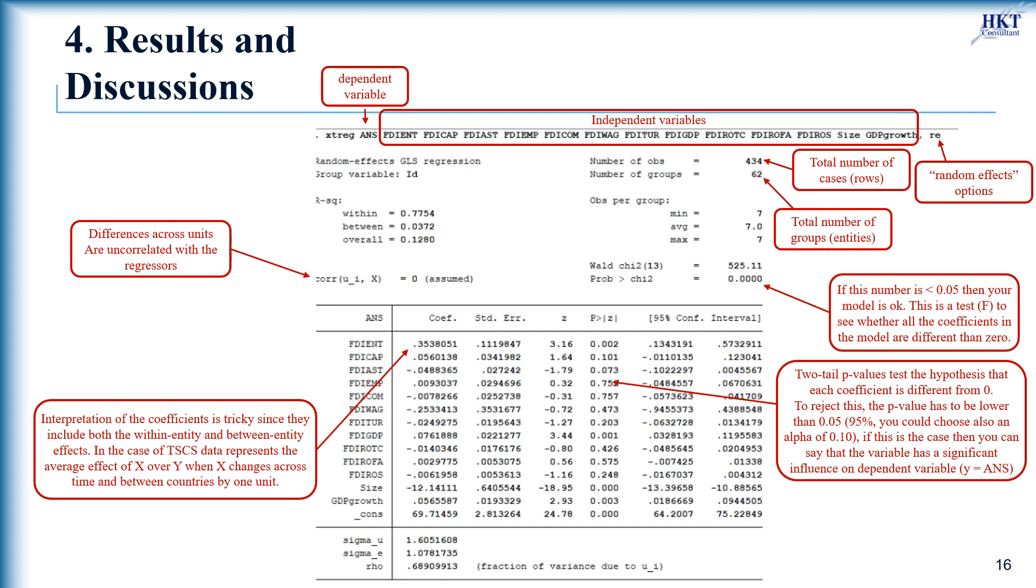In the case of our empirical research, the results of random effects regression indicate that two independent variables related to FDI such as FDI and FDI GDP and all of two control variables have significant impacts on the dependent variable that is the sustainability of Vietnam provinces.